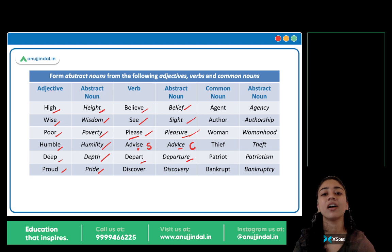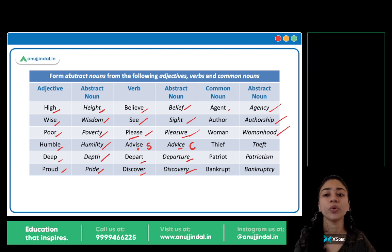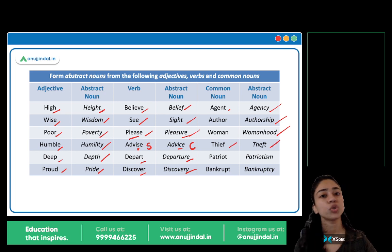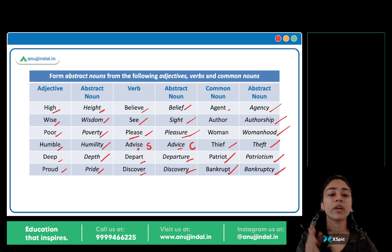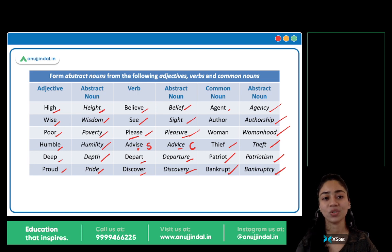Depart becomes departure. Arrive becomes arrival. Discover becomes discovery. Common nouns hain: agent becomes agency, author is authorship, woman is womanhood — jaise man manhood, boy boyhood. Thief becomes theft. Patriot — patriotism. Bankrupt — bankruptcy. Toh yeh ho gaye hamare abstract nouns. Abstract nouns can be formed from adjectives, from verbs, as well as common nouns. I hope this is clear.